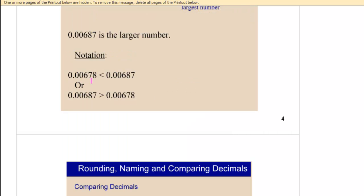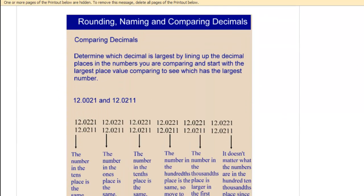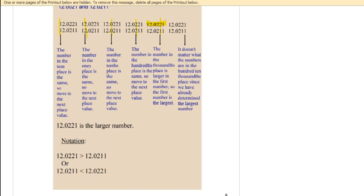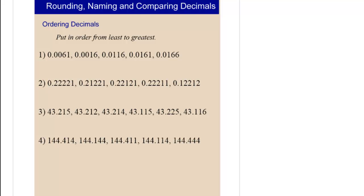So here's some notation: we could say 678 hundred-thousandths is less than 687 hundred-thousandths, or 687 hundred-thousandths is greater than 678 hundred-thousandths. Here's another example of comparing — I'm going down through each place value until I get to one that's bigger than the other. One and one are the same, two and two are the same, zero and zero are the same, two and two are the same, but two and one are not the same — so the top one is bigger. Pause the video and put each of these groups of numbers in order from least to greatest, then check your answers.